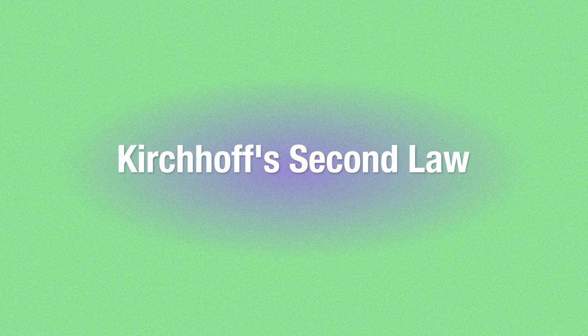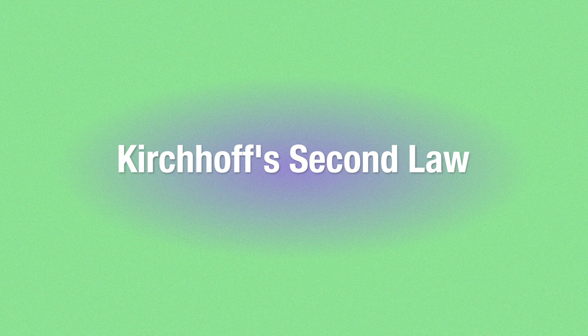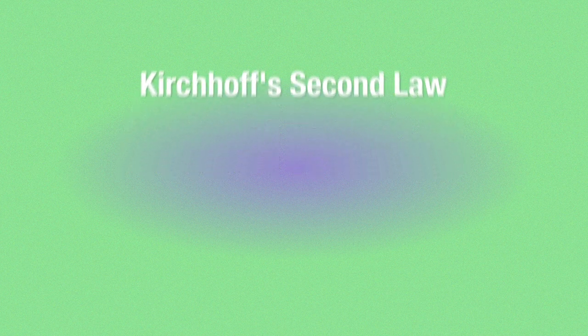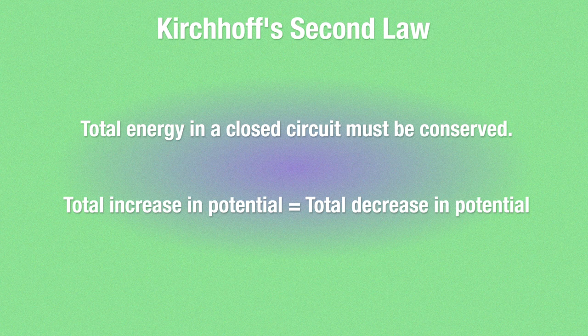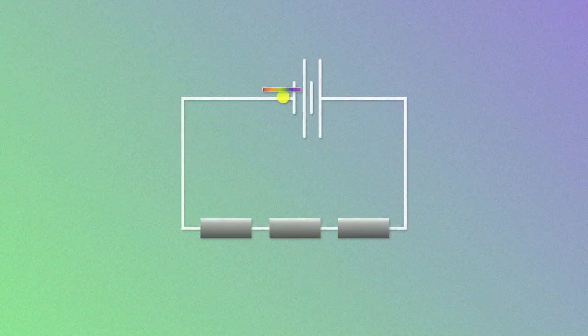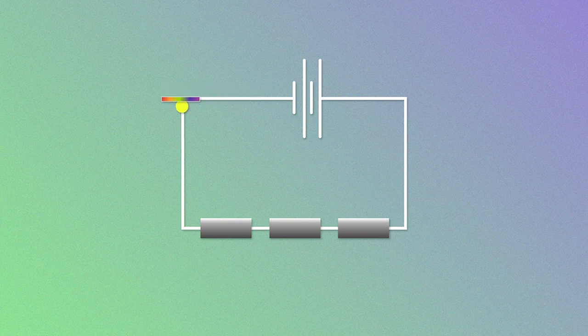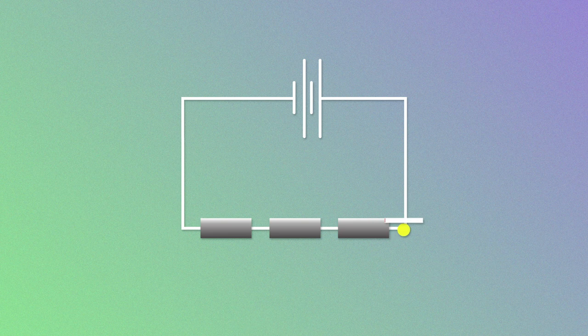Now for Kirchhoff's second law, that is conservation of energy. Here he says, the total energy in a closed circuit must be conserved in such a way that the total EMF provided by the power source is equal to the total potential difference in the circuit. Look at it this way. If the charge carriers lose energy as they flow through a component, we call it a potential drop.